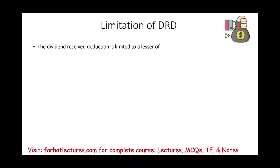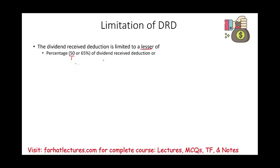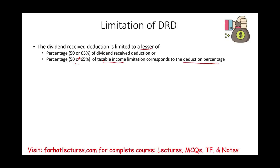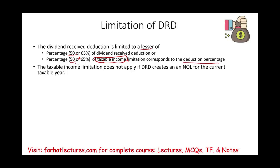The dividend-received deduction is limited to the lesser of: a percentage of dividends received — and that percentage, depending on ownership, could be 50% if you own 20% or less, 65% if you own 20% to 80%, or obviously 100% if you own more than 80% — or that same percentage applied to taxable income. We're going to compute taxable income and take 50% of taxable income, take 50% of the dividend received, compare those two. Now, when we compute taxable income and the DRD, we have to ignore those limitations if the DRD creates a net operating loss (NOL).